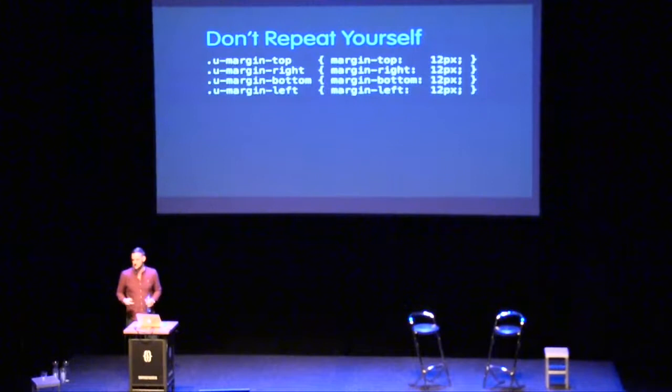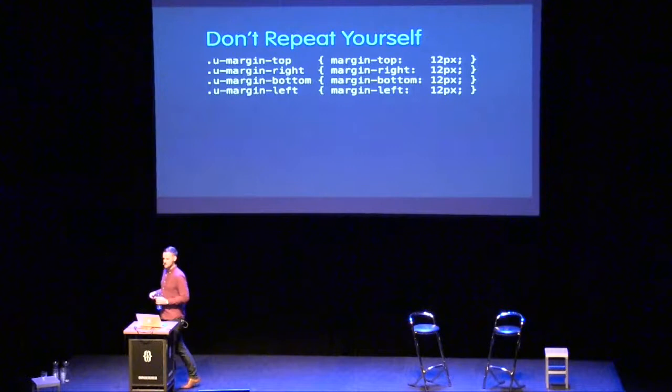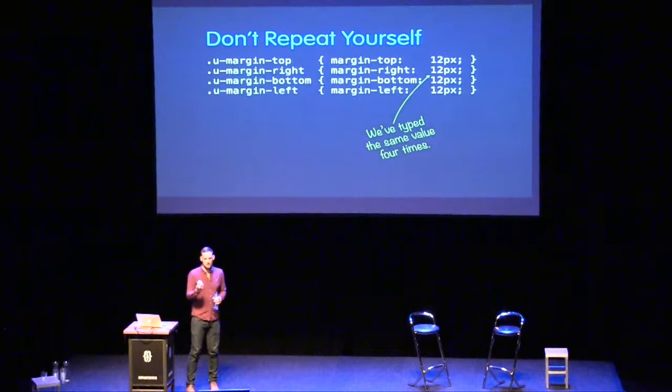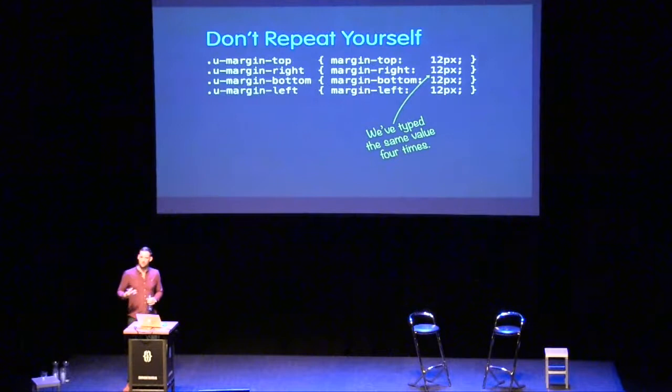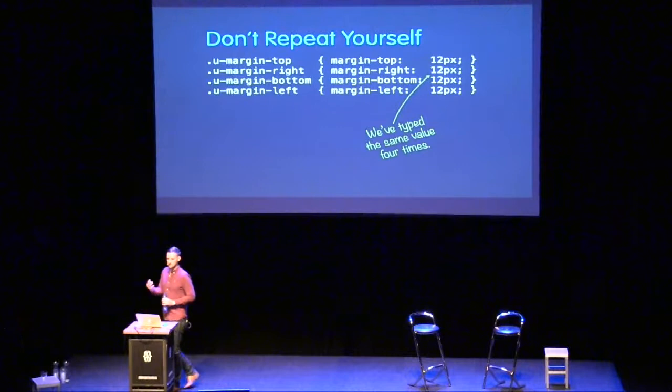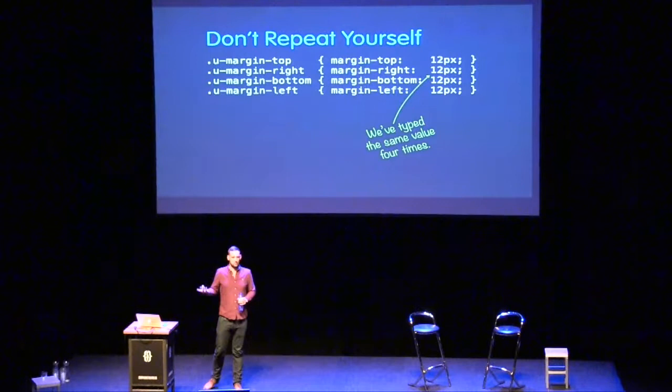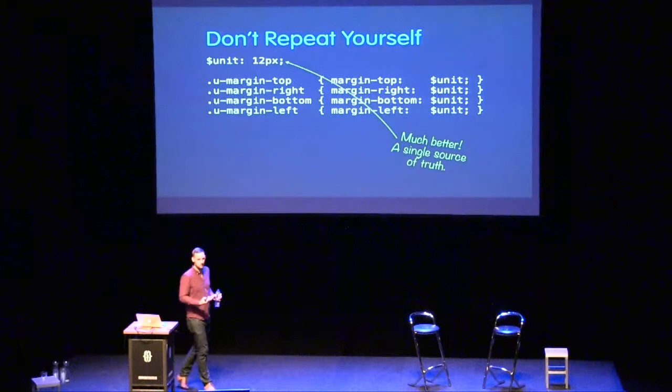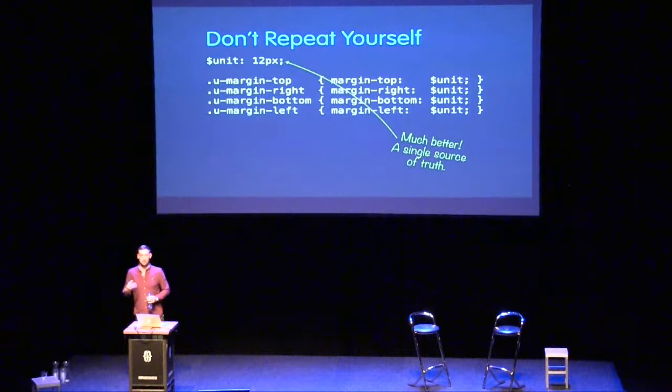Take this simple example — some simple utility classes for nudging spacing around. This 12 pixels is knowledge; it's probably our base spacing unit, our baseline grid. These four values are all 12 pixels for the same reason. If one needs to change to 15 pixels, they all must. Simply whip it out into a variable and we get the Single Source of Truth — `$unit` is our single source of truth.